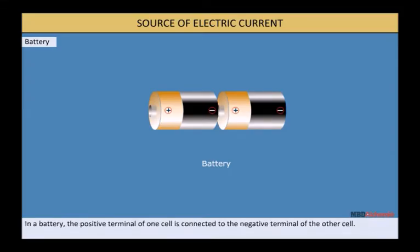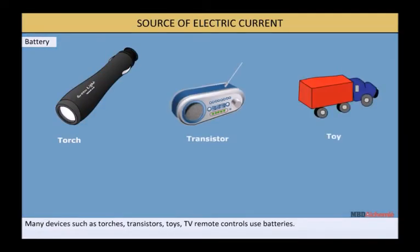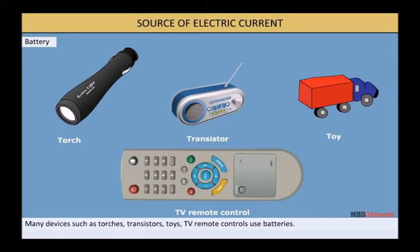In a battery, the positive terminal of one cell is connected to the negative terminal of the next cell. Many devices such as torches, transistors, toys, and TV remote controls use batteries.